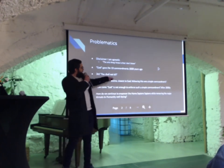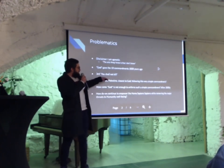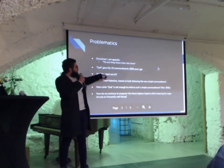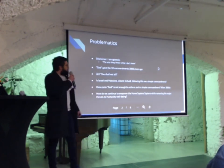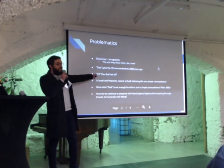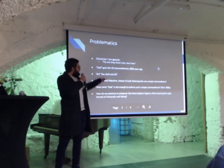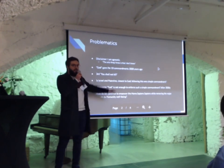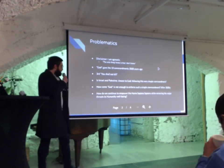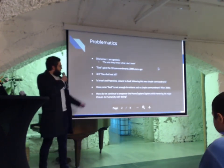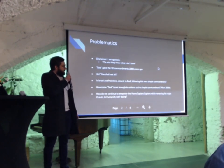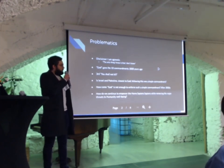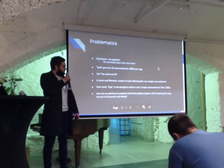It's basically the 10 commandments. The commandments said you shall not kill, but with some exceptions. But God didn't say with some exceptions — He said you shall not kill. So the other question is: how come God is not enough to enforce such a simple commandment after 3,000 years?